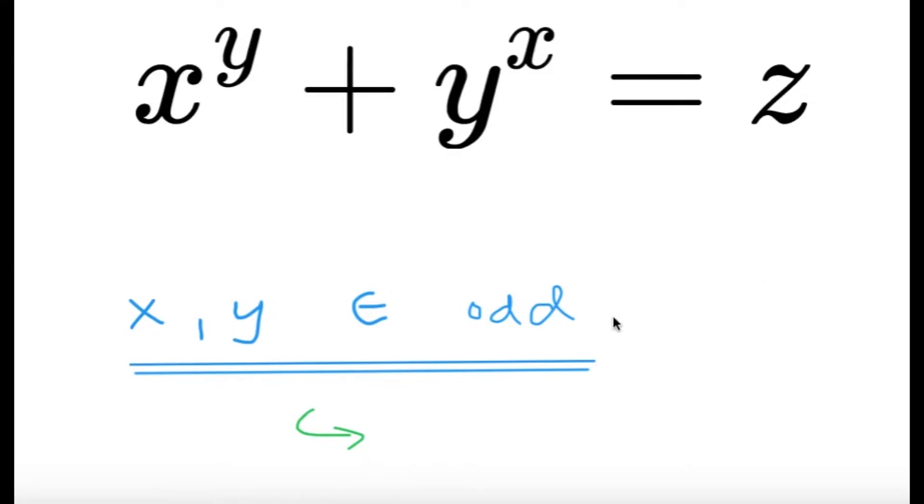Now, if x and y are both odd, well, x raised to y, that's going to be an odd number raised to an odd number, so this will become odd. For y raised to x, same thing. It's going to be an odd number raised to an odd number, so that's going to be odd. And odd plus odd, that's going to be even. But if both of them are odd, then it equals to an even number.